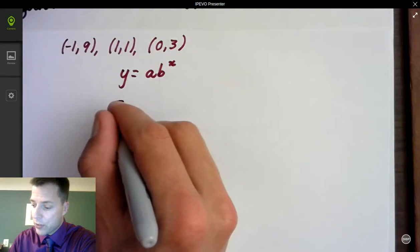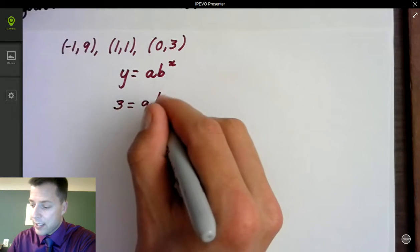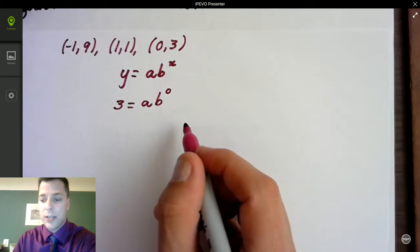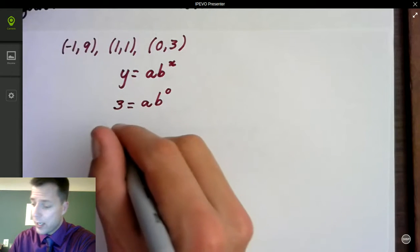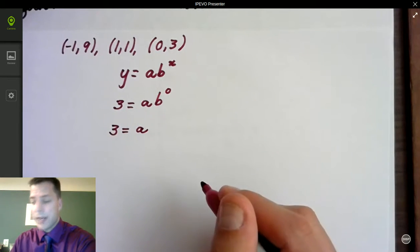We know that y equals 3 if x is 0. So I go ahead and here's my substitution. Anything to the 0 power is 1. So I have 3 equals a. All right,